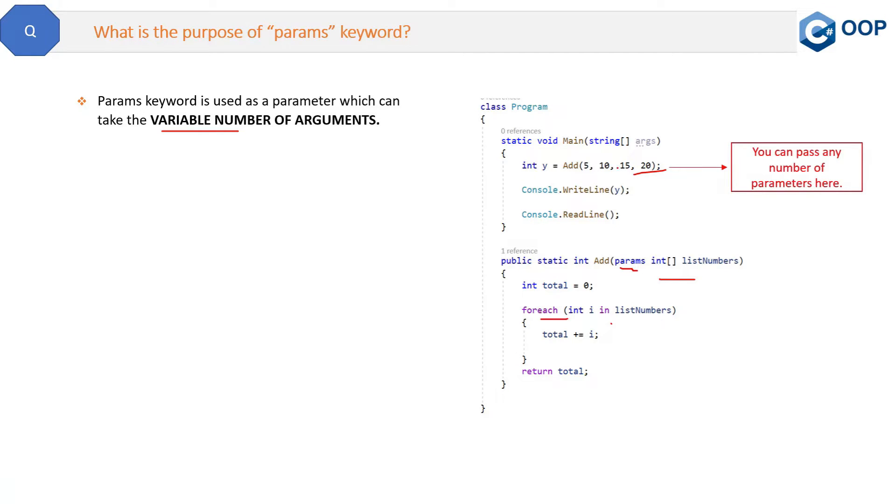Right now we have these four parameters, so we can increase the number of parameters here. When is it useful? It is useful when the programmer does not have any prior knowledge about the number of parameters to be passed in the method, or I can say to be used in the method.